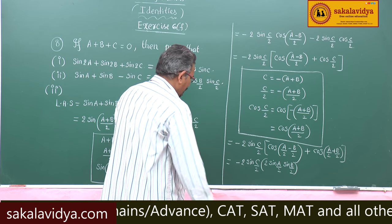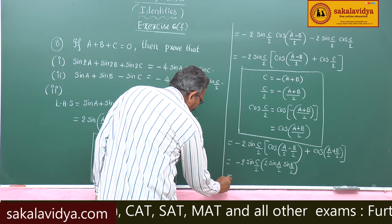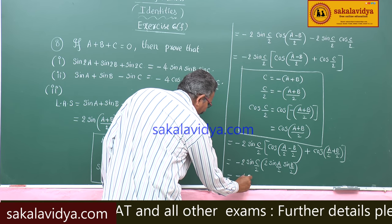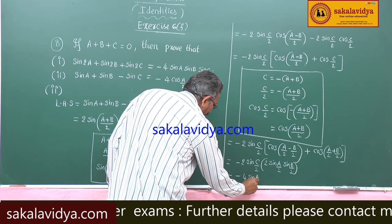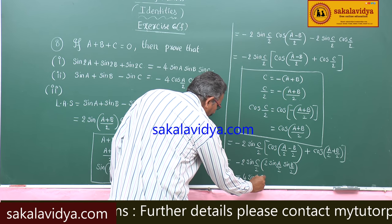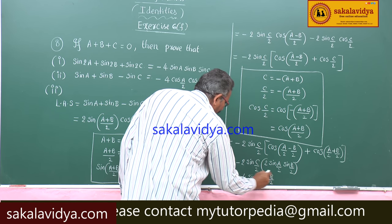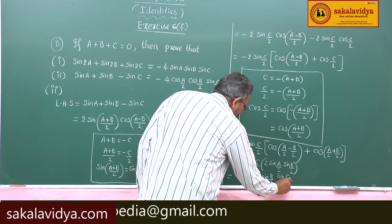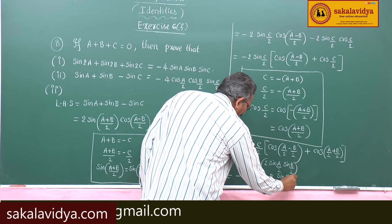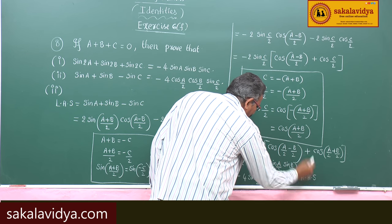This gives us -4 sin(A/2) sin(B/2) sin(C/2), which equals the right hand side. Hence proved.